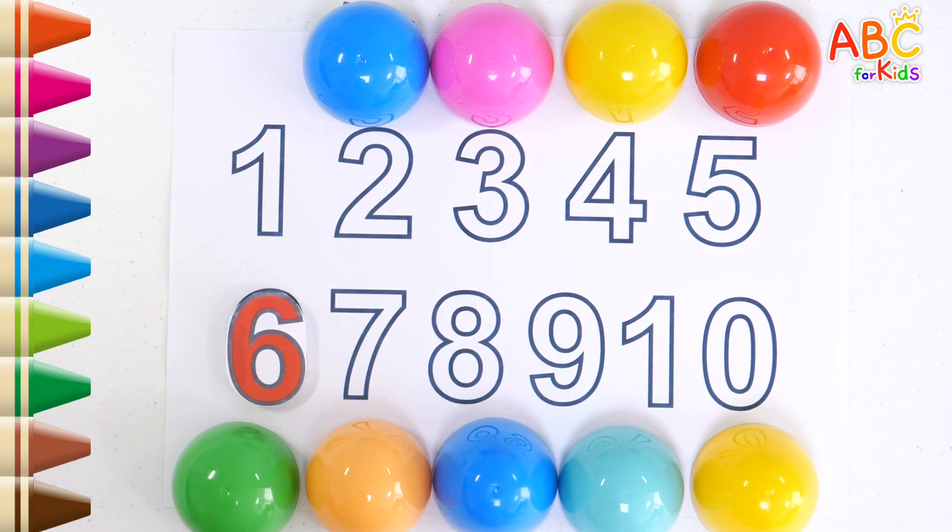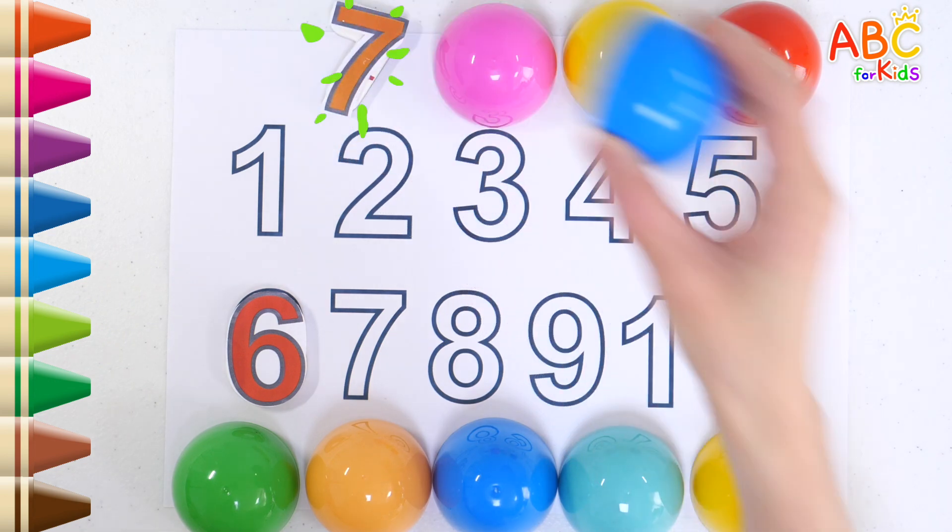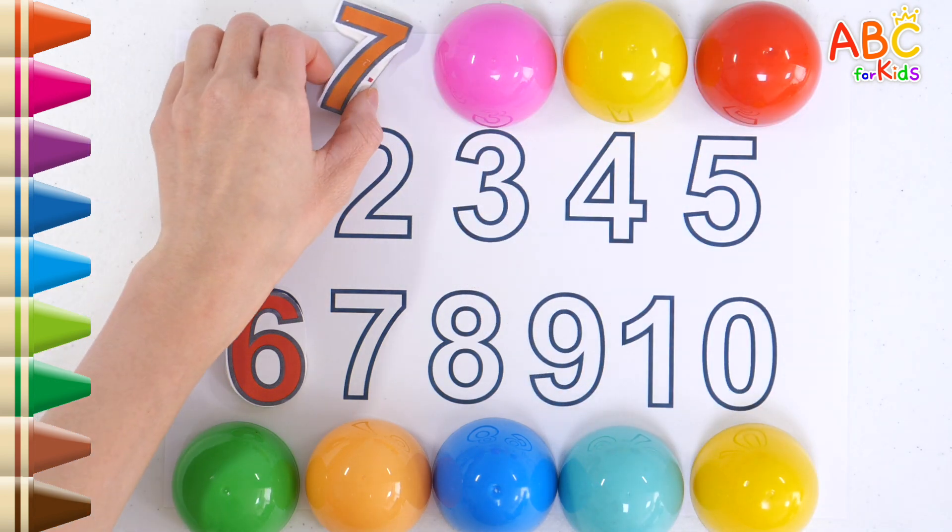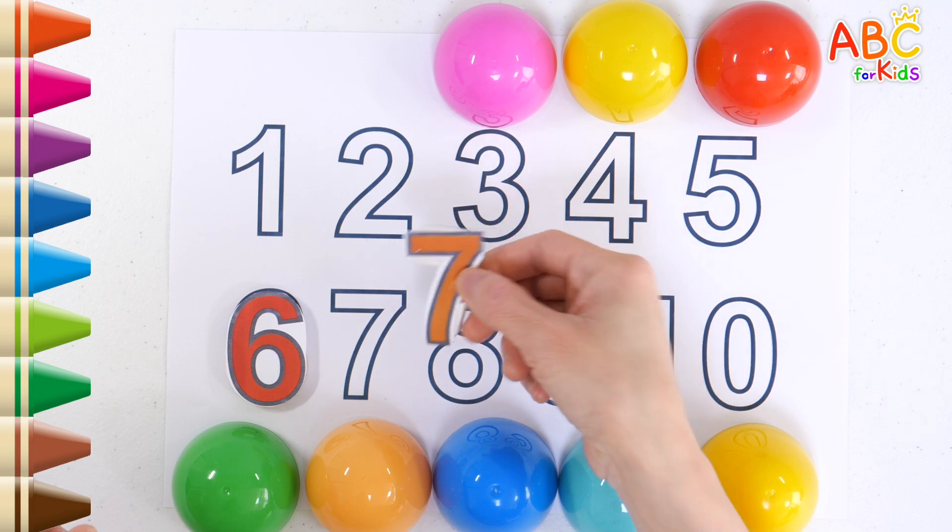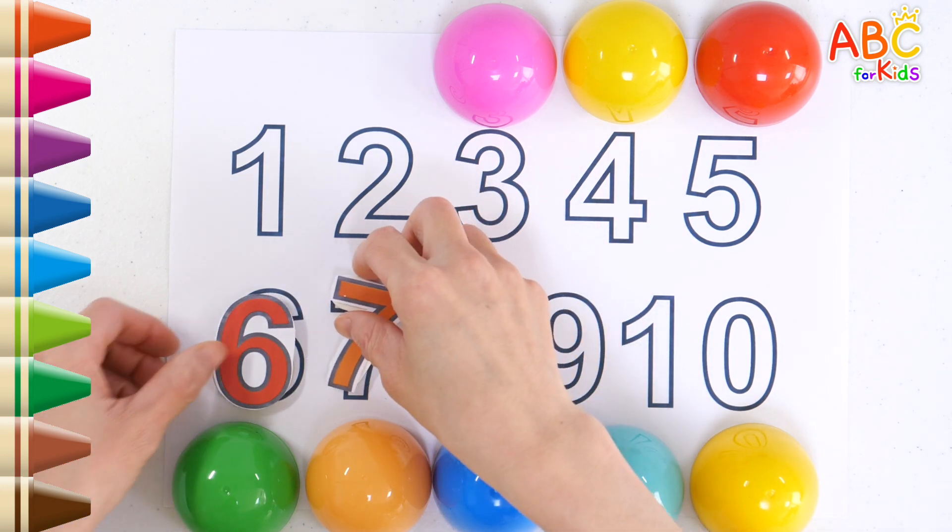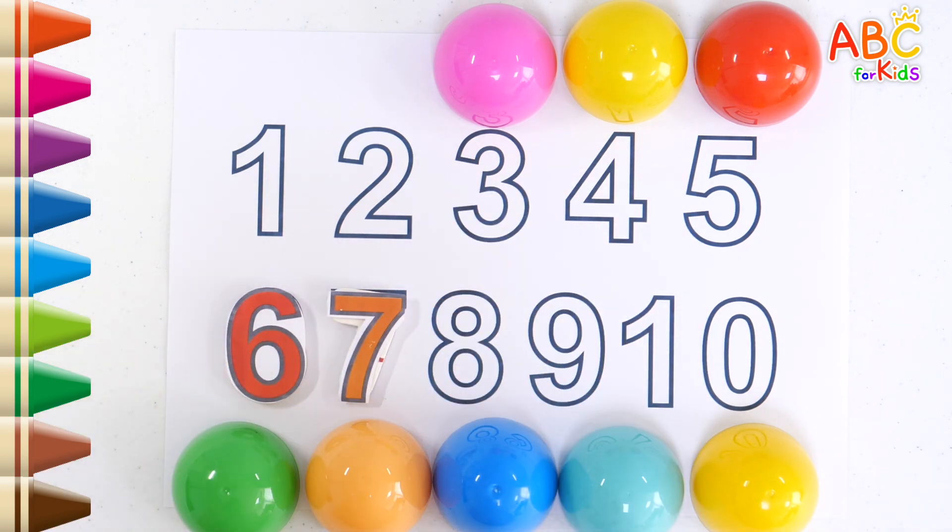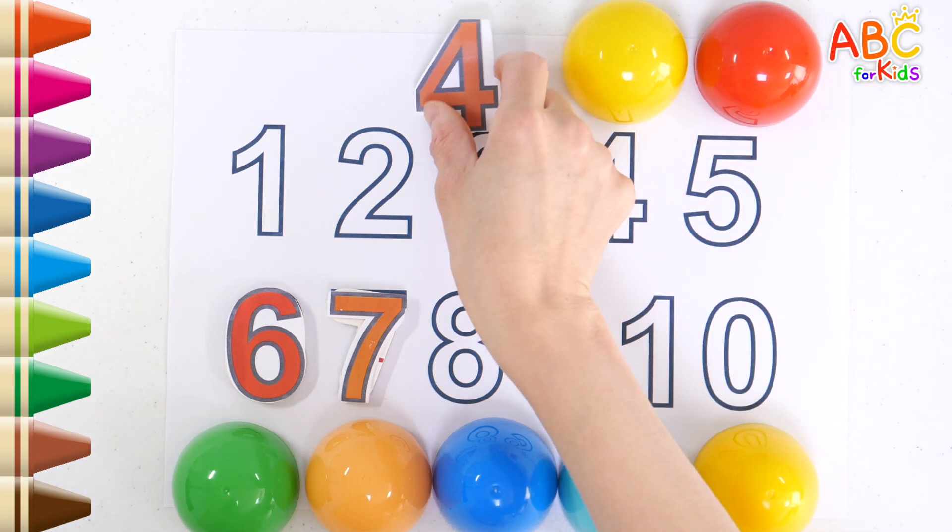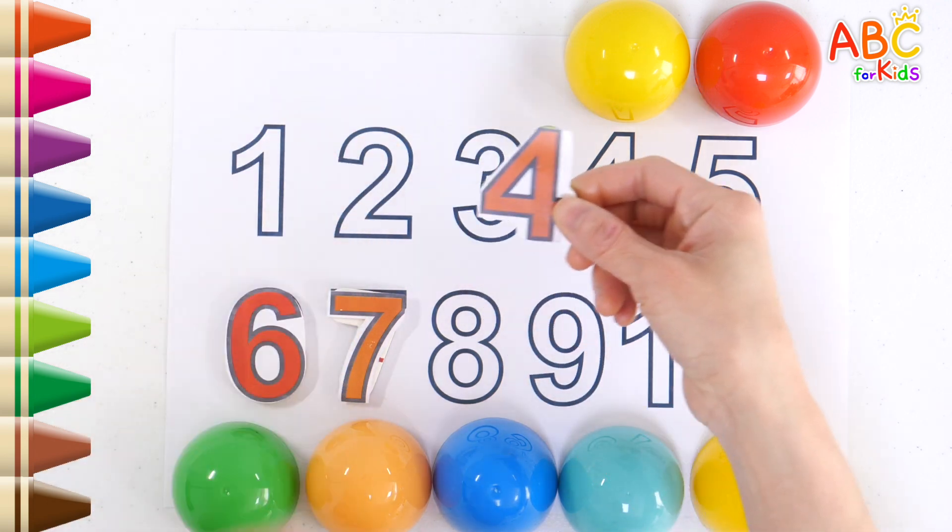The second blue egg contains number 7. What's inside the third pink egg? It's the number 4.